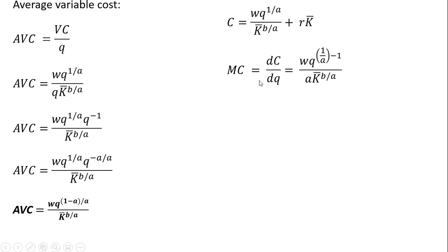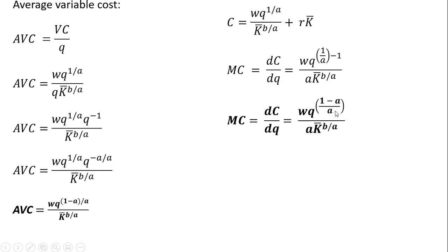The last thing we need is marginal cost. We get marginal cost by taking the derivative of the cost equation with respect to Q. We have a Q term, so we bring down 1 divided by A in front — that gives us 1 divided by A now in the denominator. Then we subtract 1 from the exponent on the Q term. As we've seen in other examples, this simplifies to 1 minus A, all divided by A. That is marginal cost.